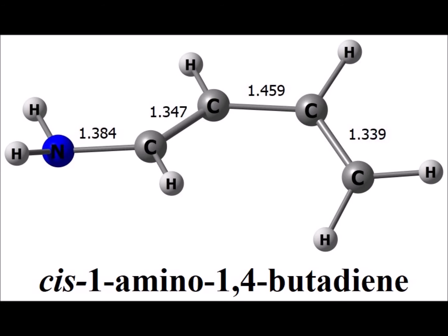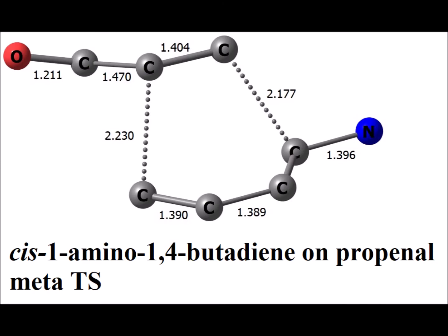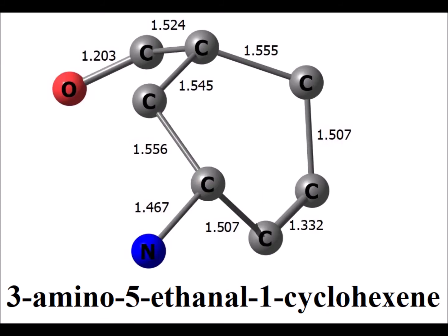For the second case, our diene is going to be the 1-amino-1,4-butadiene, and the dienophile is propenal. Here is the transition state for the Diels-Alder reaction where the 1-amino-1,4-butadiene and propenal are oriented in such a way as to make substituents meta to each other. Here is the product of that Diels-Alder reaction, showing the substituents being meta to each other.